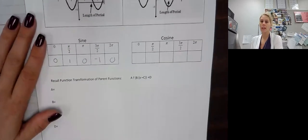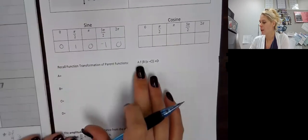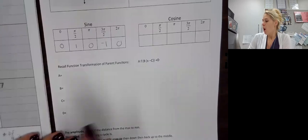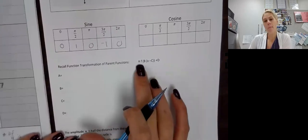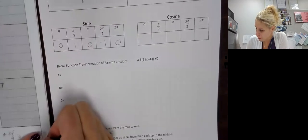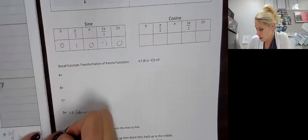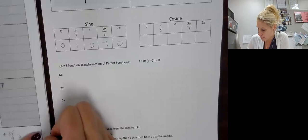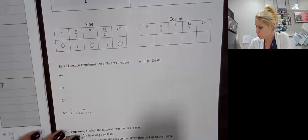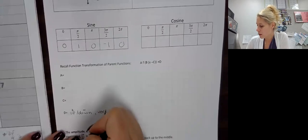So since I'm going to relate this to transformations, let's review a couple of things. What do each of these values — A, B, C, and D — do to our parent function? The easiest one to look at is D, because D moves it up or down. Up was our positive and down was our negative. With graphing a trig function, we are going to call this a vertical shift.